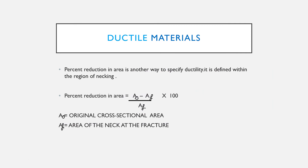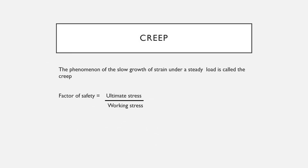The percent reduction in area is another way to specify ductility, defined within the region of necking. Percent reduction in area equals AO minus AF divided by AF into 100, where AO is the original cross-sectional area and AF is the area of the neck at fracture.